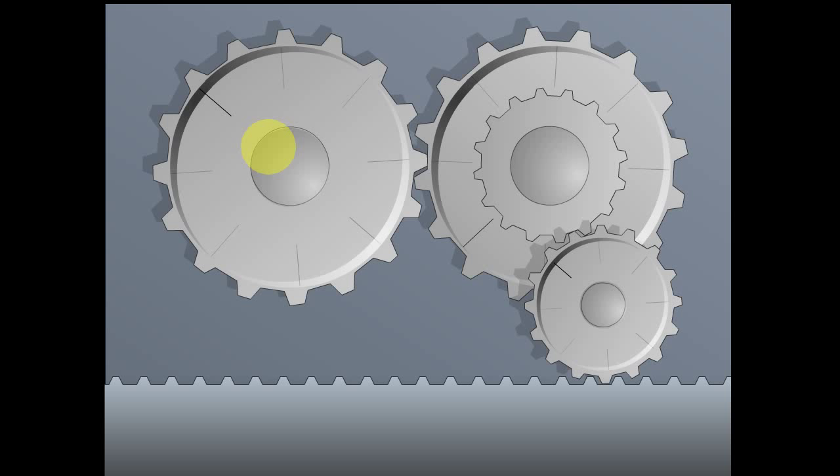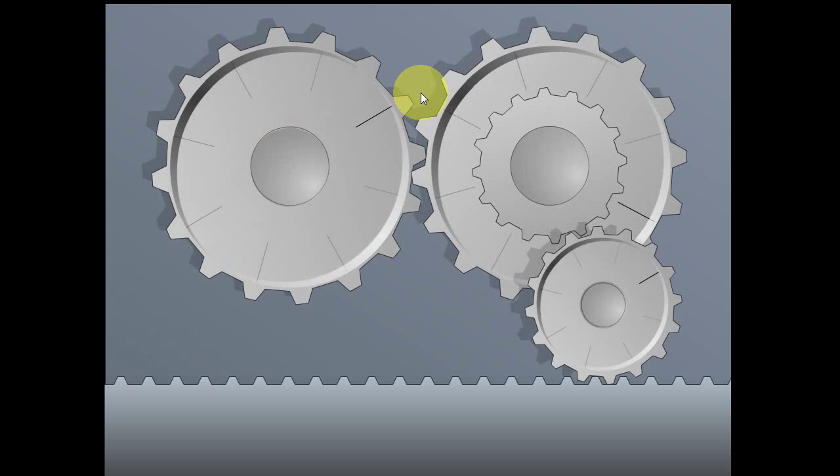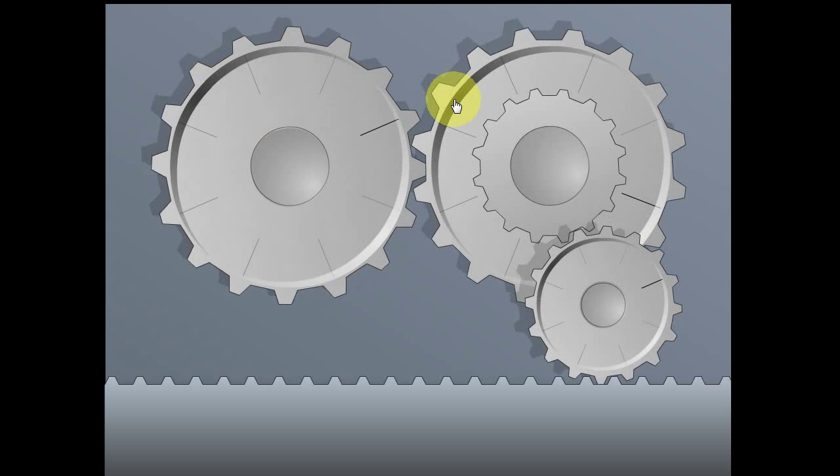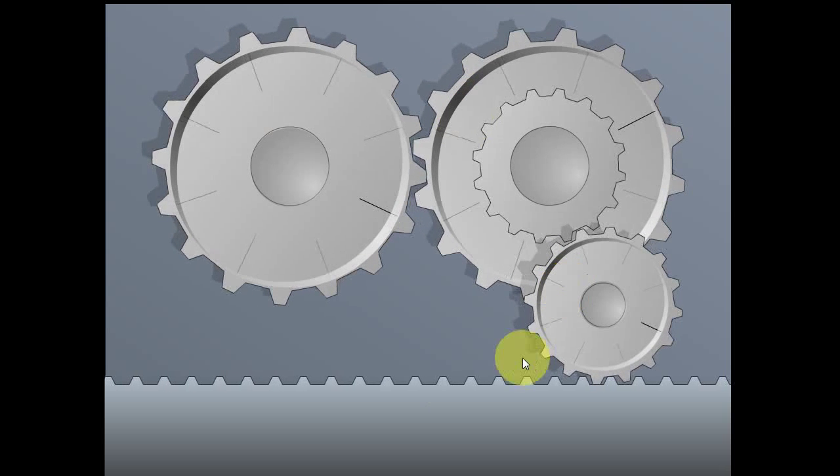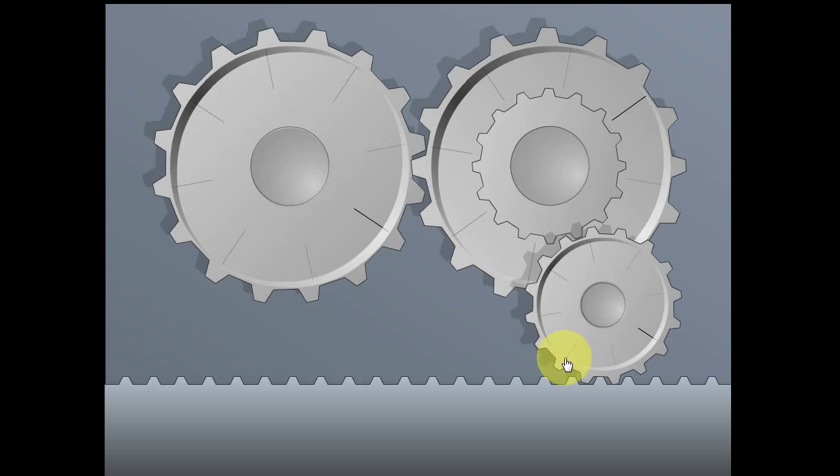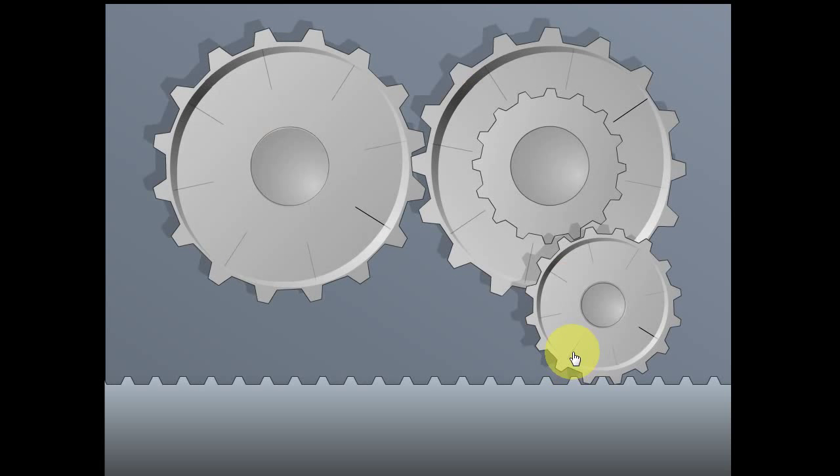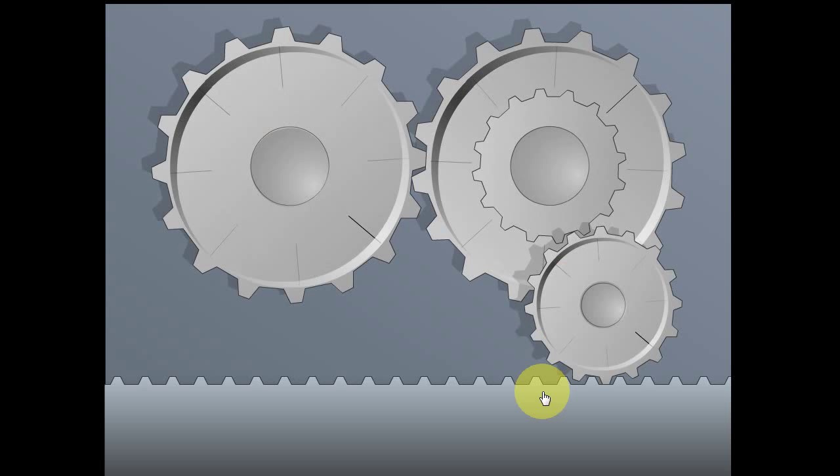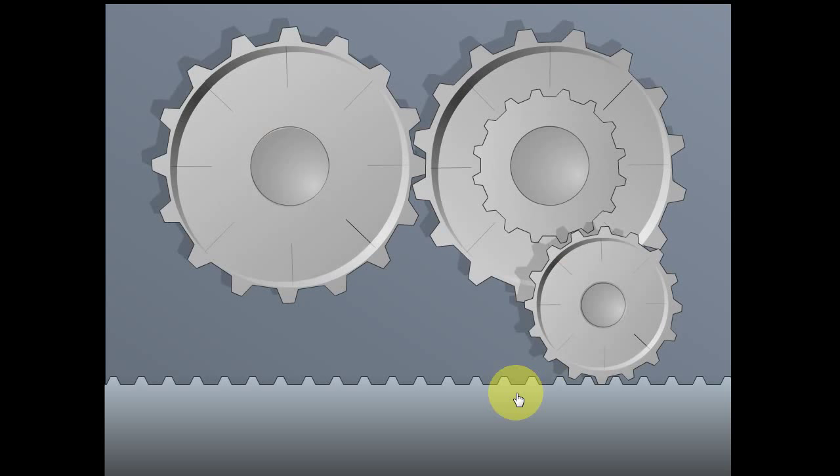You've got a gear train going on here. And you've got a worm and a worm gear system going on here. I'm sorry. That's wrong. That's not a worm and gear. That's actually a rack and pinion. Worm and worm gear is helical, whereas this one is going translation, so that's a rack and pinion. So you've got two systems going on.